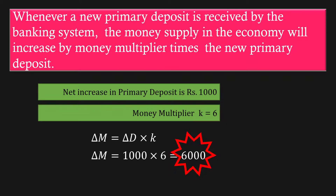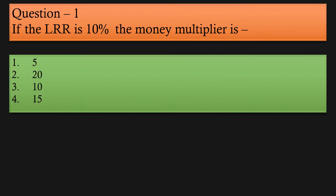It is time for us to test our understanding. Try these multiple choice type questions. Question 1: If the legal reserve ratio is 10%, the money multiplier is — (a) 5, (b) 20, (c) 10, (d) 15. Option 3 is correct, the answer is 10.